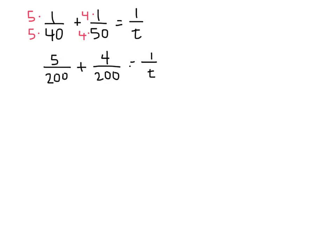So now we can combine the two fractions, now that they have the same denominator. So we get 9 over 200 equals 1 over t. We want to get t by itself, so we'll do a couple operations here. Let's multiply both sides by t.